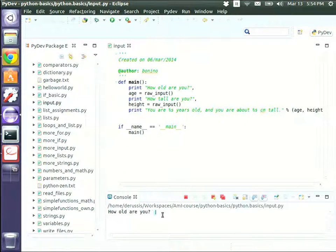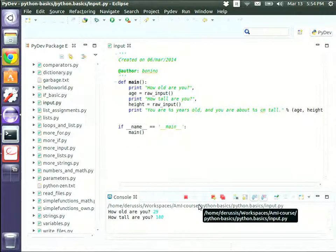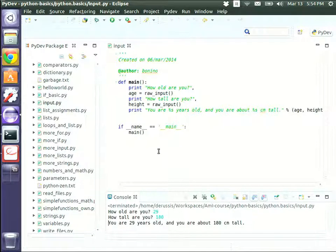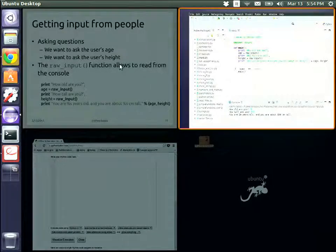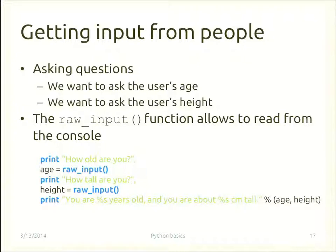When the program runs, it asks 'how old are you?' and 'how tall are you?', then prints the result — for example 'you are 29 years old and you are about 180 centimeter tall'. Note that raw_input automatically converts everything to a string, so you could enter 'trial' or 'Luigi' and it would print 'you are trial years old and you are about Luigi centimeter tall'.